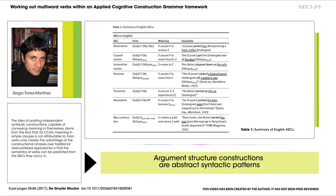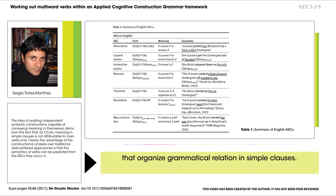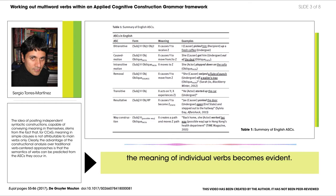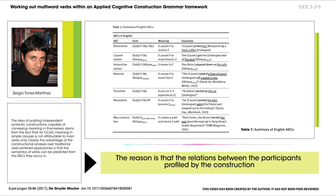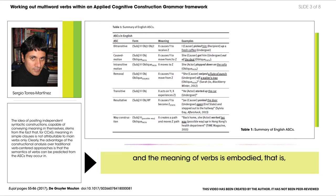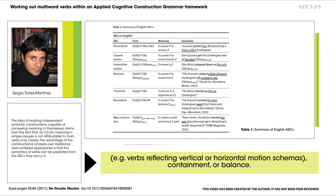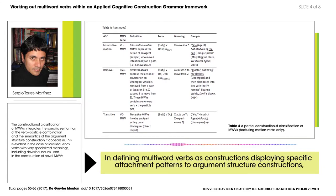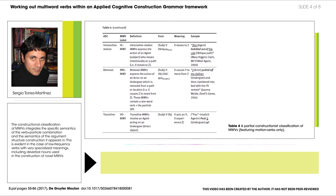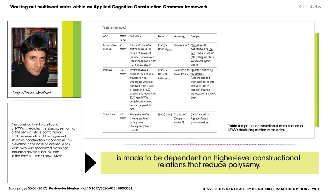Argument structure constructions are abstract syntactic patterns that organize grammatical relations in simple clauses. As shown in Table 1, by focusing on specific syntactic constructions, the meaning of individual verbs becomes evident. The reason is that the relations between the participants profiled by the construction and the meaning of verbs is embodied — that is, it becomes accessible to us thanks to our experience with motion, e.g. verbs reflecting vertical or horizontal motion schemas, containment, or balance. In defining multi-word verbs as constructions displaying specific attachment patterns to argument structure constructions, the relation between the lexical verb and the particle is made dependent on higher-level constructional relations that reduce polysemy.